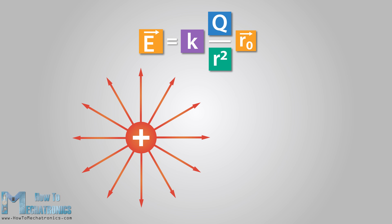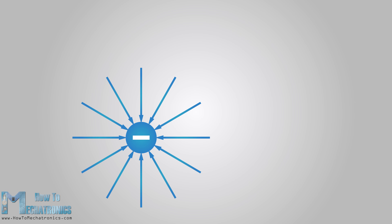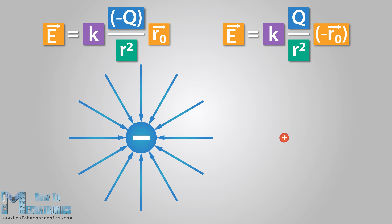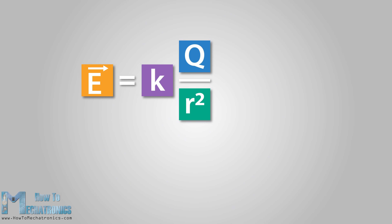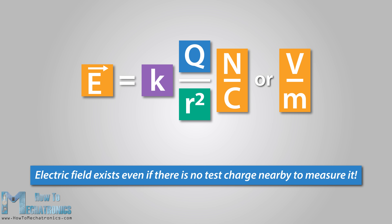For a positive point charge and a positive test charge, the result has a positive sign, meaning the positive test charge would be repelled by the positively charged object. That's why the electric field diagram has arrows pointing outwards. For a negative point charge and a positive test charge, we have an attractive force shown by the negative sign in the equation. The electric field line diagram for a negatively charged object would look like that of the positively charged object but with arrows pointing inwards. The unit of measurement for electric field is newtons per coulomb or volts per meter. Electric field exists even if there is no test charge nearby to measure it. Similarly, a gravitational field surrounds the earth even if there is no test mass nearby to measure it.